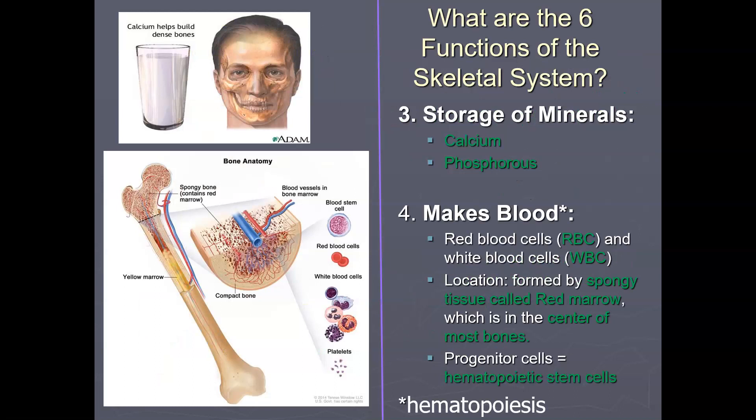The third function of the skeletal system is storage of minerals — calcium and phosphorus. Inside the bone, there is a combination of minerals and collagen, which is a protein. The collagen gives a soft framework for the bone, while calcium and phosphate minerals add strength and harden that framework. 99% of all the calcium in your body can be found inside your bones or in your teeth, leaving only 1% circulating in your bloodstream.